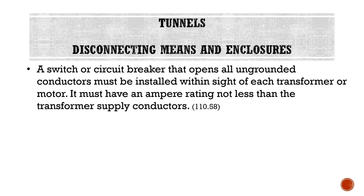Moving on, we're going to talk about disconnecting means and enclosures as they pertain to tunnels. A switch or circuit breaker that opens all ungrounded conductors must be installed within sight of each transformer or motor. So specifically for transformers and motors installed in a tunnel, we have to supply them with a disconnect switch within sight — meaning if you're at the transformer or motor, you should be able to see it. The disconnect switch must have an ampere rating not less than the transformer supply conductors.